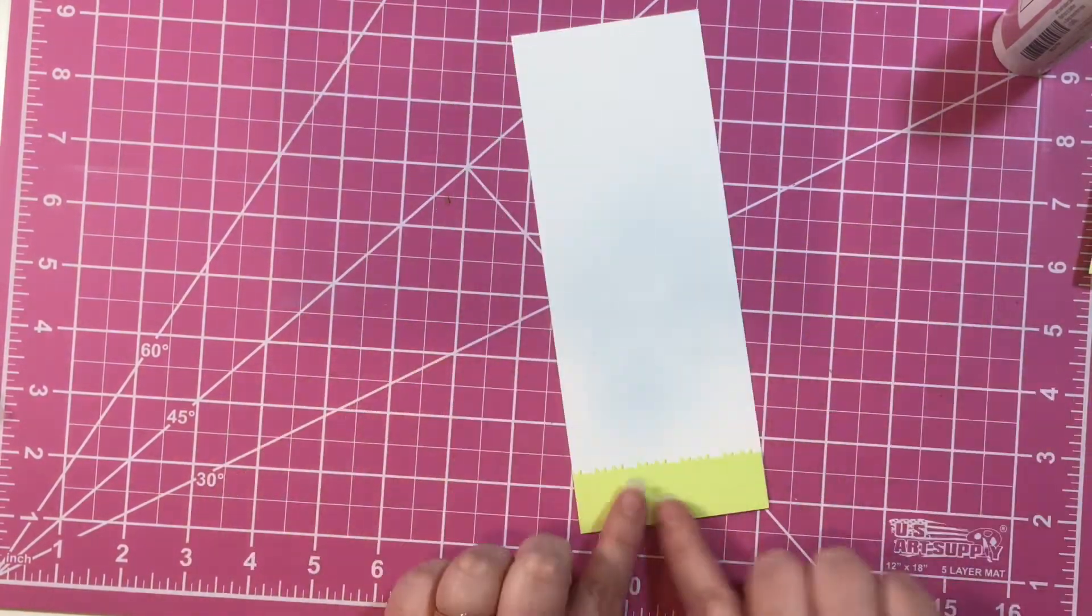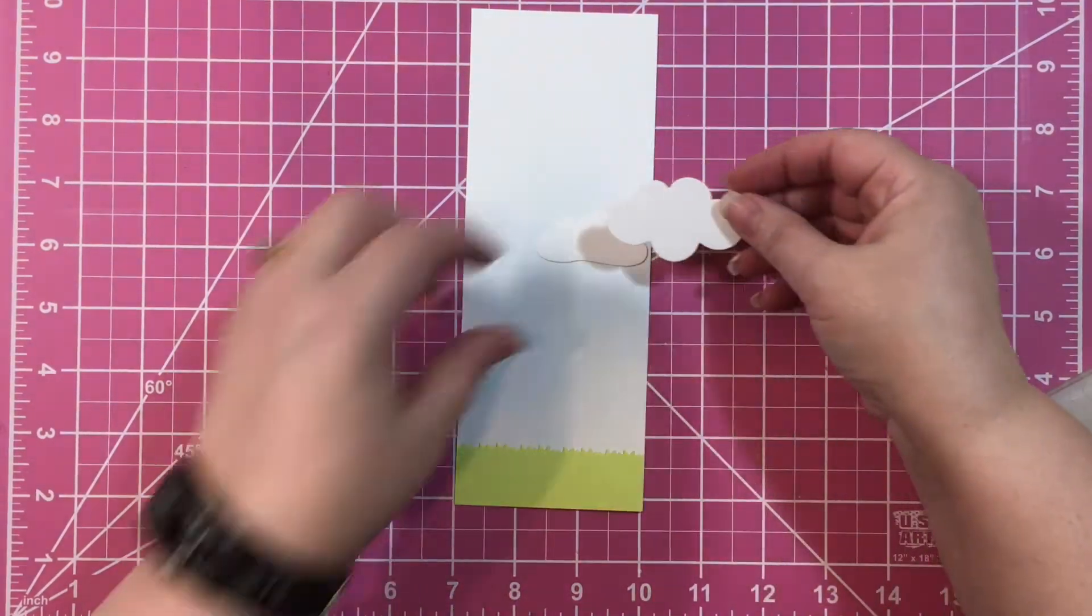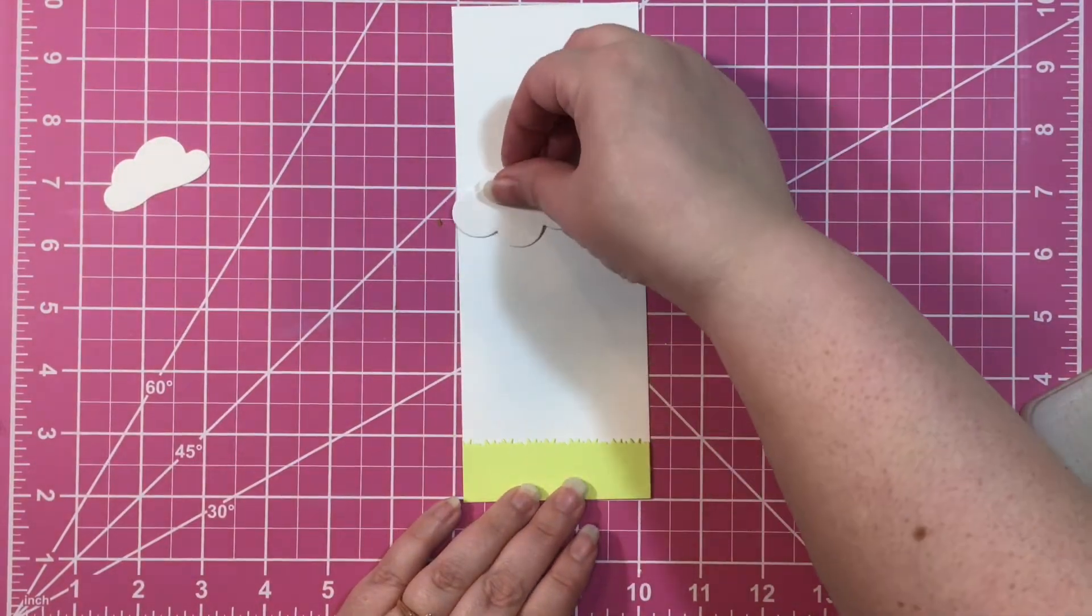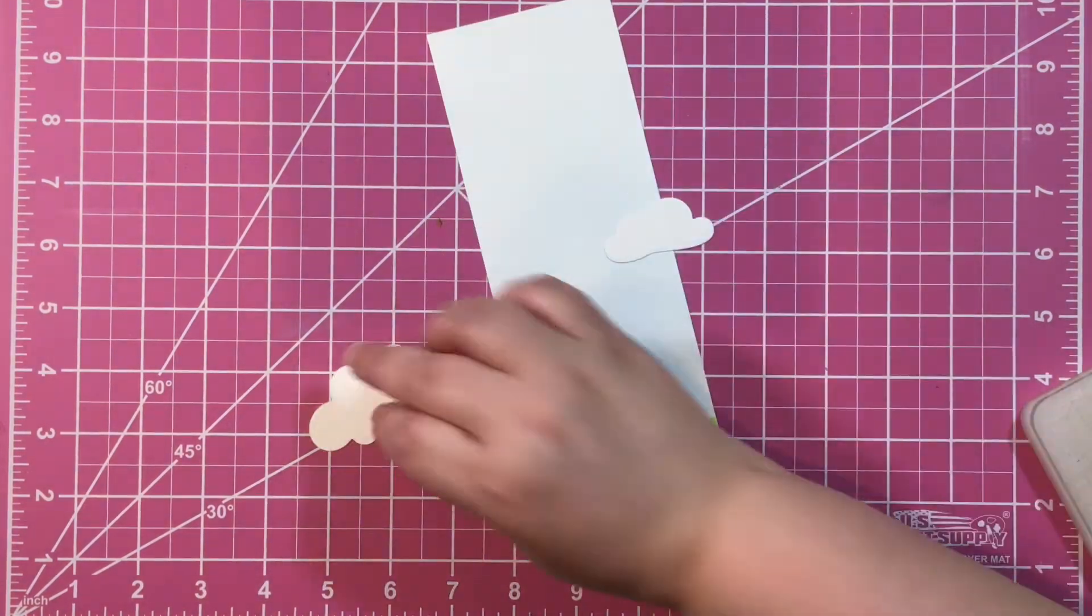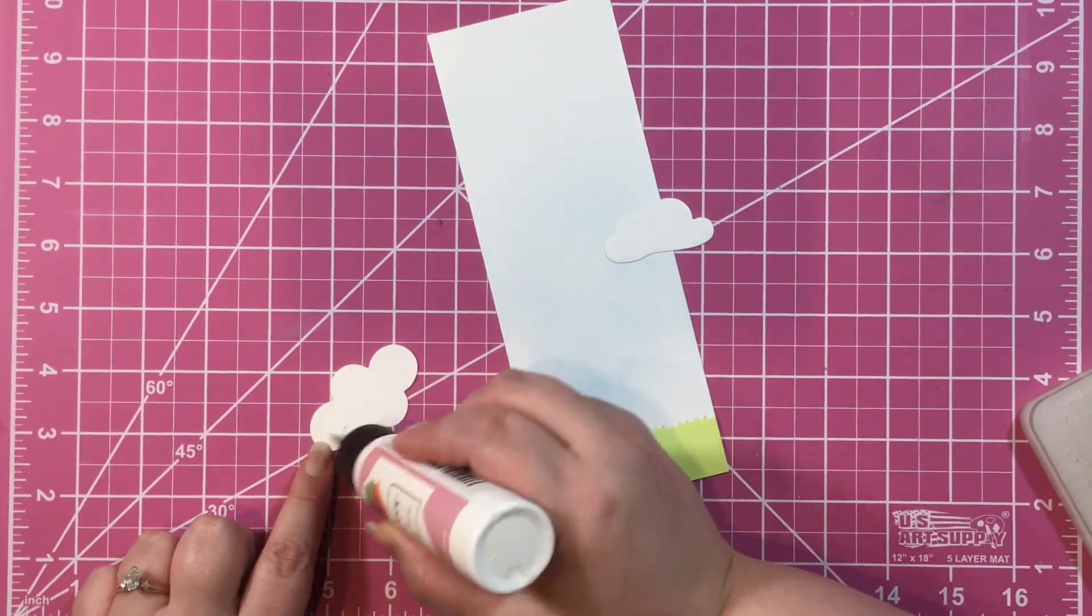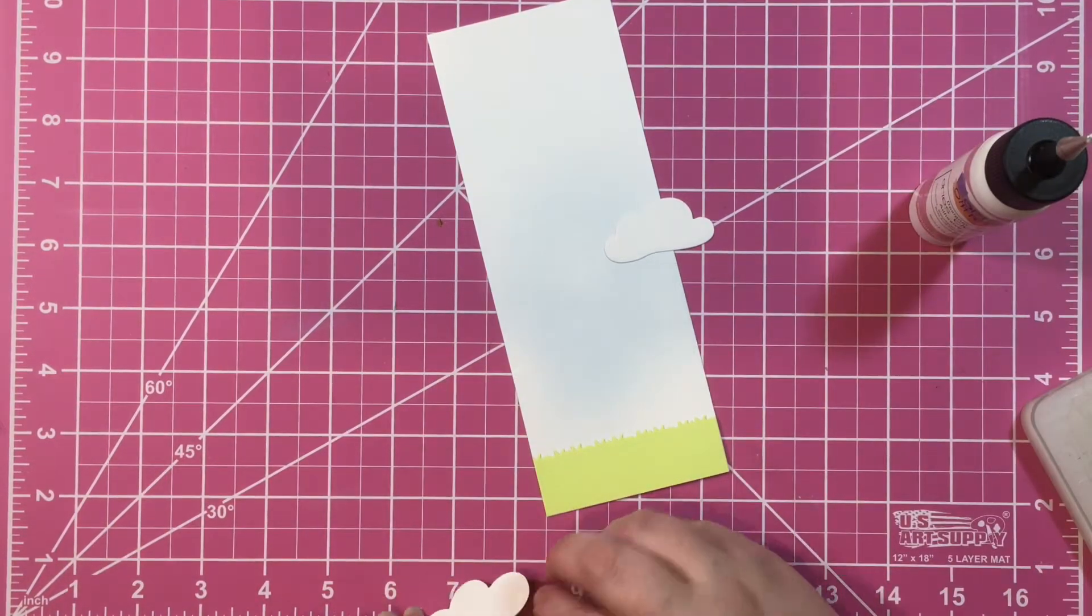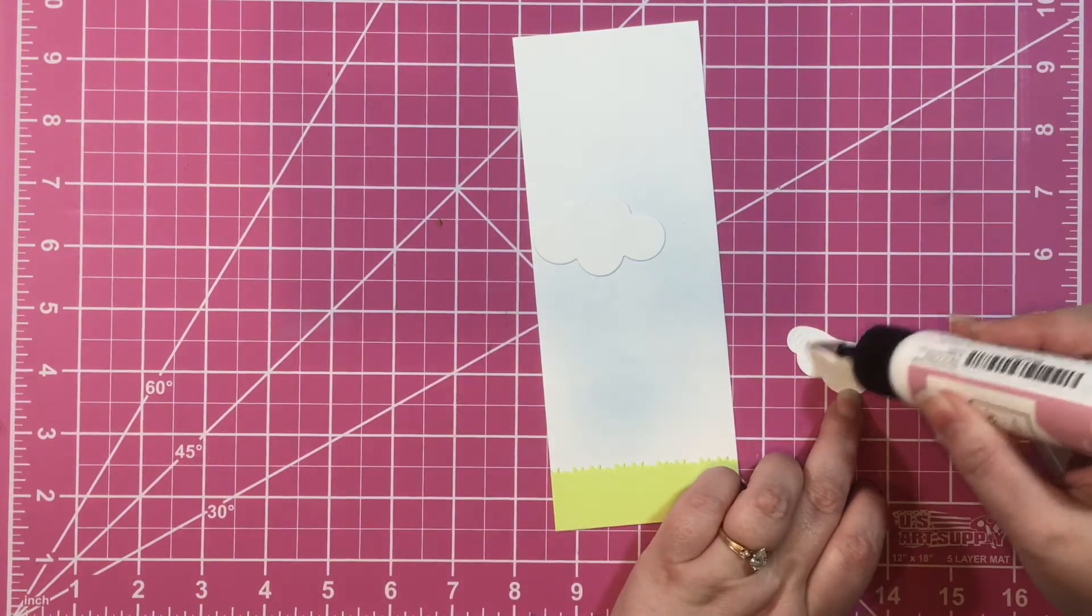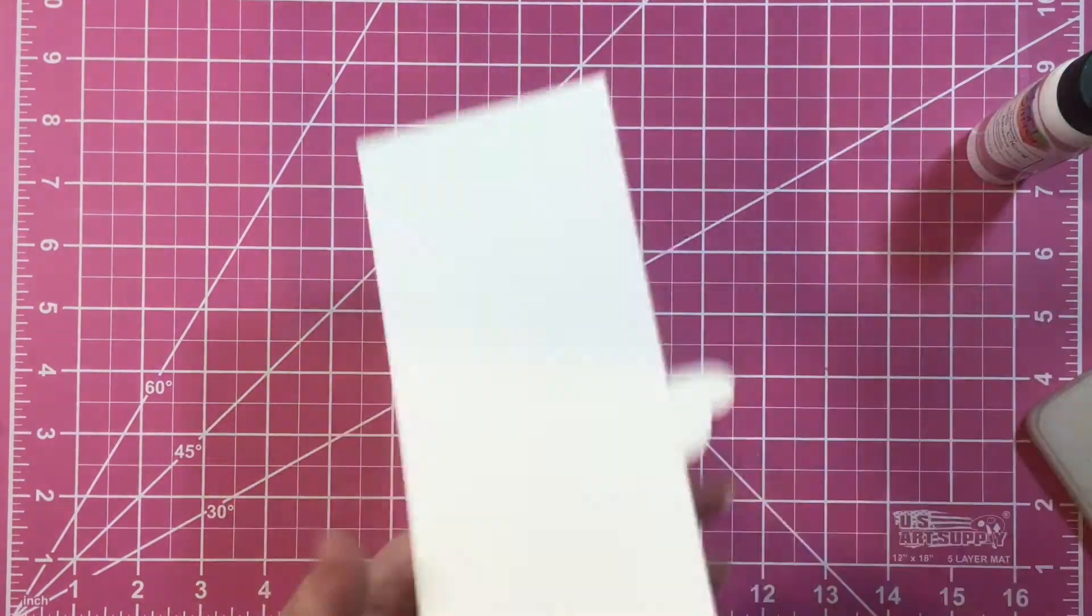Then I cut out grass with the clouds and grass die and attached it to the card, clipping off the little excess piece. Then I cut out some clouds from our Valentine's slimline die, the big puffy one and the one that's not so puffy at the bottom. I cut off the little part that was hanging over and attached that little part on the other side of the card.